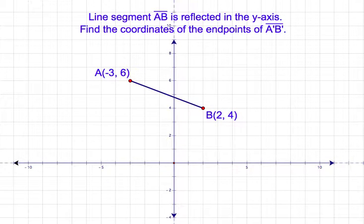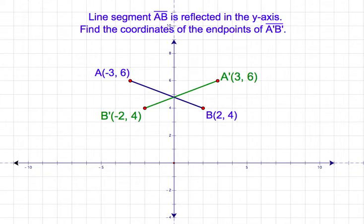Problem number 3: Line segment AB is reflected in the y-axis. Find the coordinates of the endpoints of line segment A' and B'. Solution: The coordinates of point A' are (3, 6). The coordinates of point B' are (-2, 4).